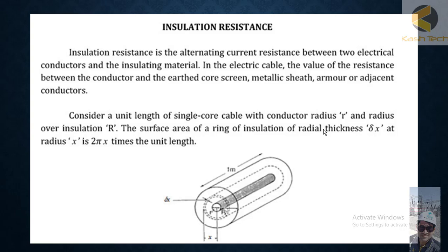Consider a unit length of single core cable with conductor radius r, so this is small r is the radius of the conductor, and the radius over insulation is the capital R. You can see this is basically the radius for the insulation.